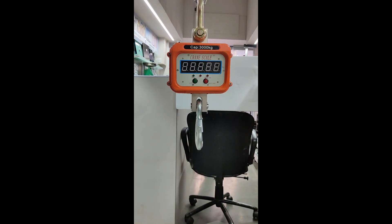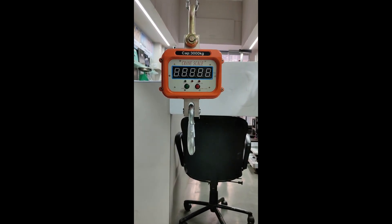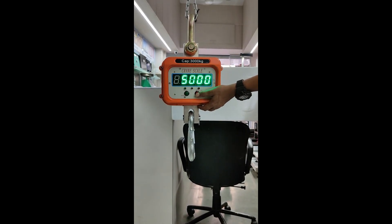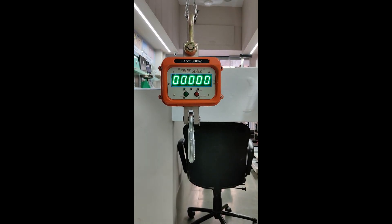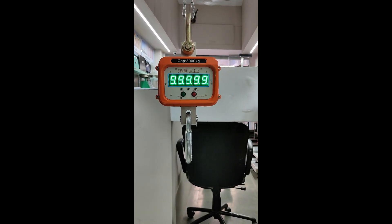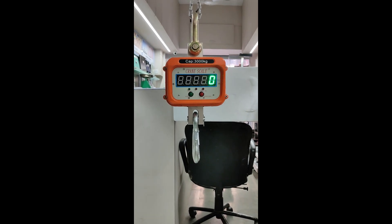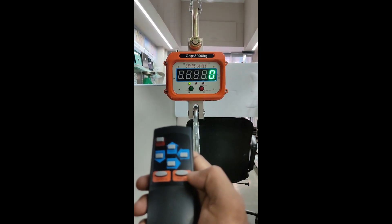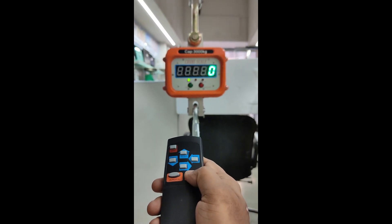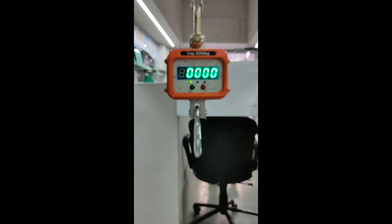Now we are going to see how to calibrate the crane scale. First, switch on the scale and wait until the display shows zero. On the remote, press the install button. The scale will ask for a password.